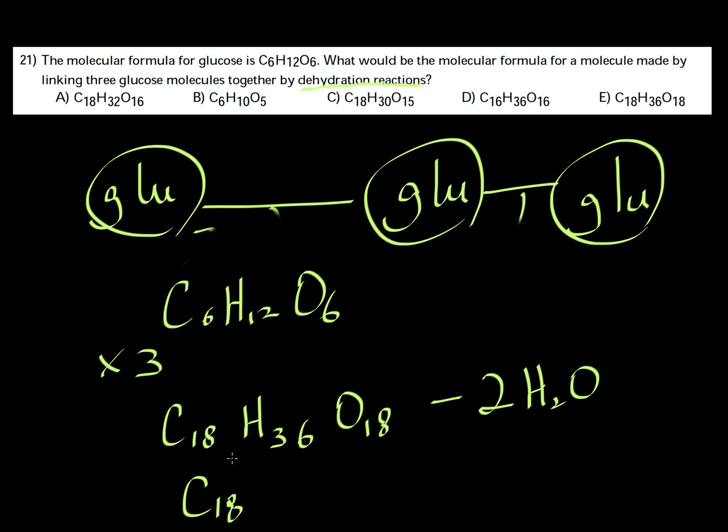So we're losing four Hs, that makes H32. And then we're losing two O's because we're losing two water molecules, so it's going to be O16. When you look at the answer, it's A.